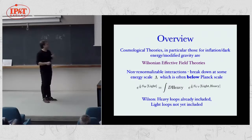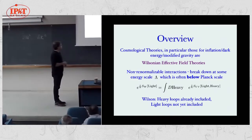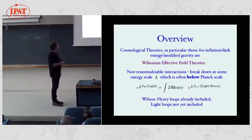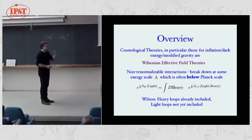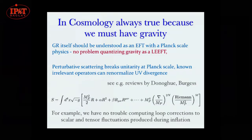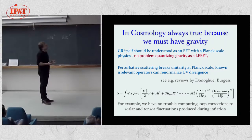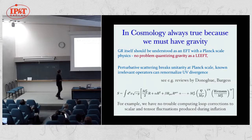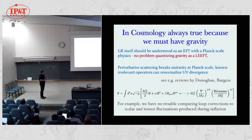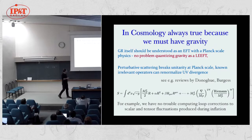Gravity itself is probably the lightest particle in the system, and we're yet to compute the loop contributions from those fields. The fact that we're dealing with effective field theories is forced on us in gravity — we're not dealing with renormalizable theories, because gravity breaks down at some scale. At the very least it's the Planck scale where it breaks perturbative unitarity. There's nothing wrong with that; it just means it's an effective theory, so we should think of the Einstein-Hilbert term as the leading term in some low energy derivative expansion.